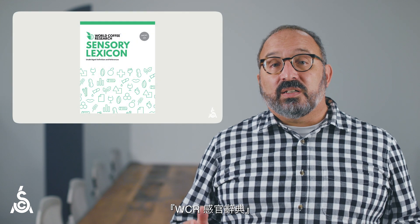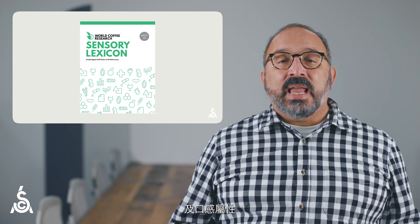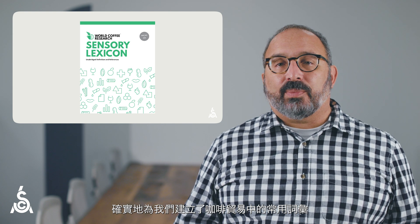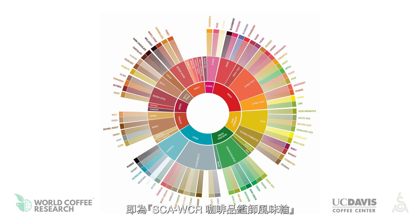This is an amazing piece of work and it will be the basis for lots of flavor investigation in the future — the WCR lexicon. This includes 110 flavor, aroma, and texture attributes in coffee, and literally sets a common vocabulary for us in the coffee trade. The lexicon descriptors were later integrated into a flavor wheel following joint work by WCR, SCA, and the University of California at Davis. Here is the final product: the SCA WCR Coffee Tasters Flavor Wheel.